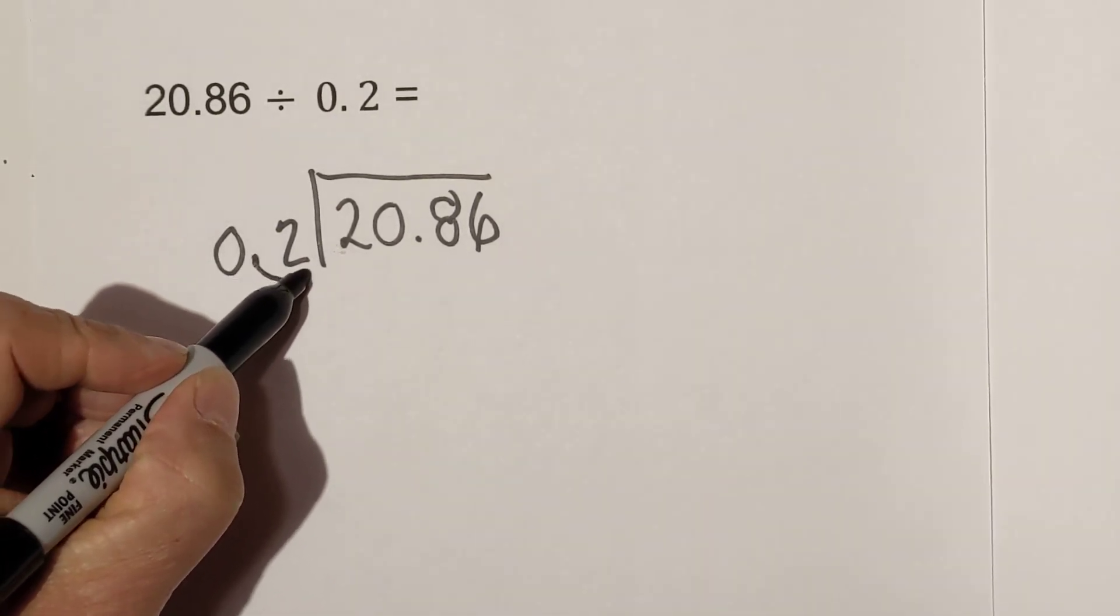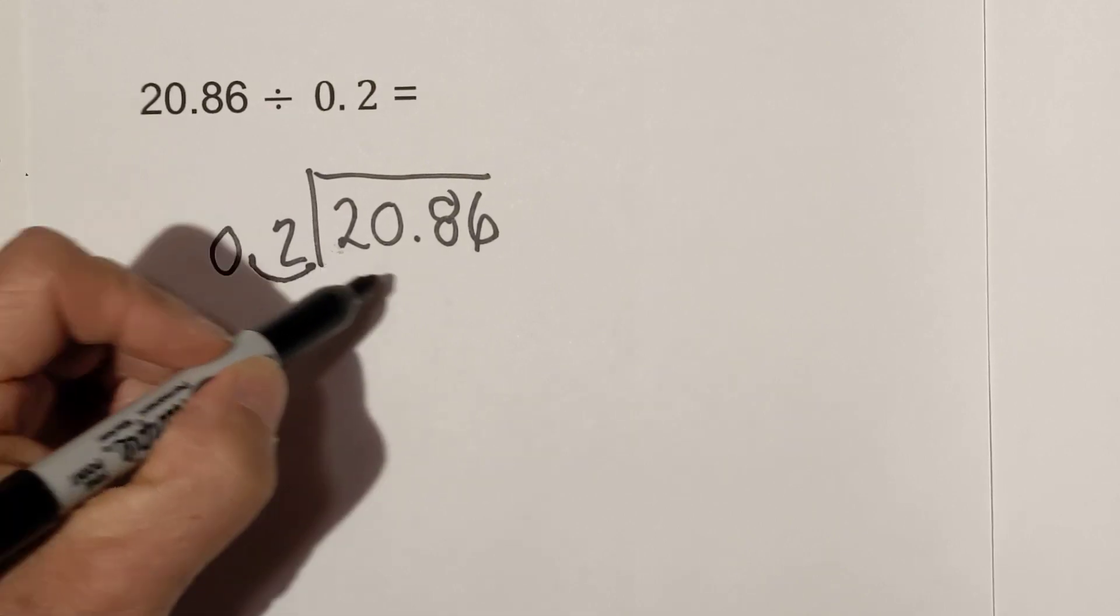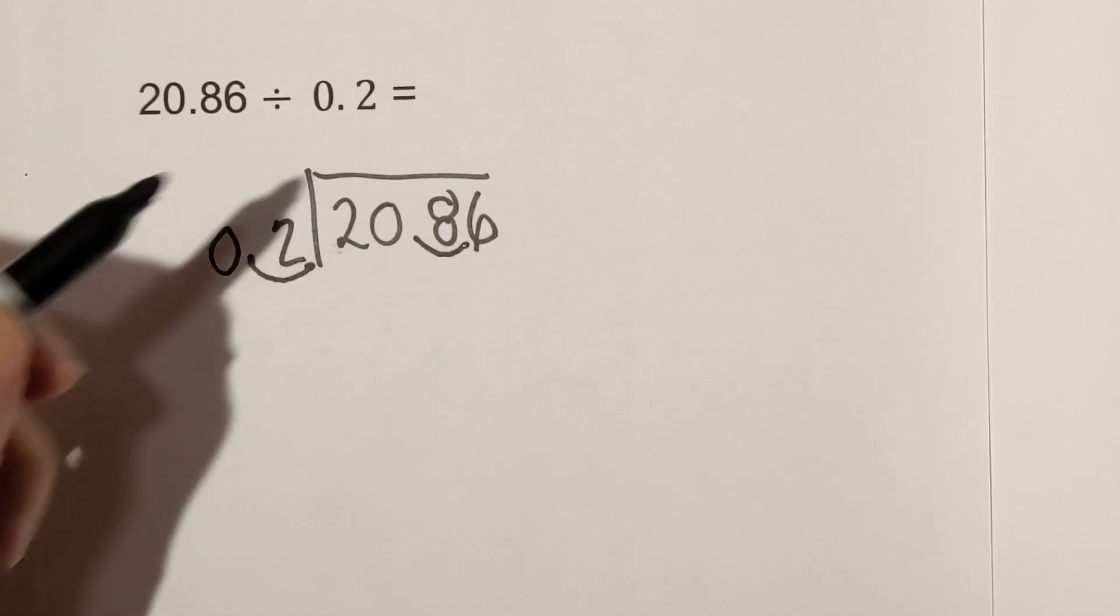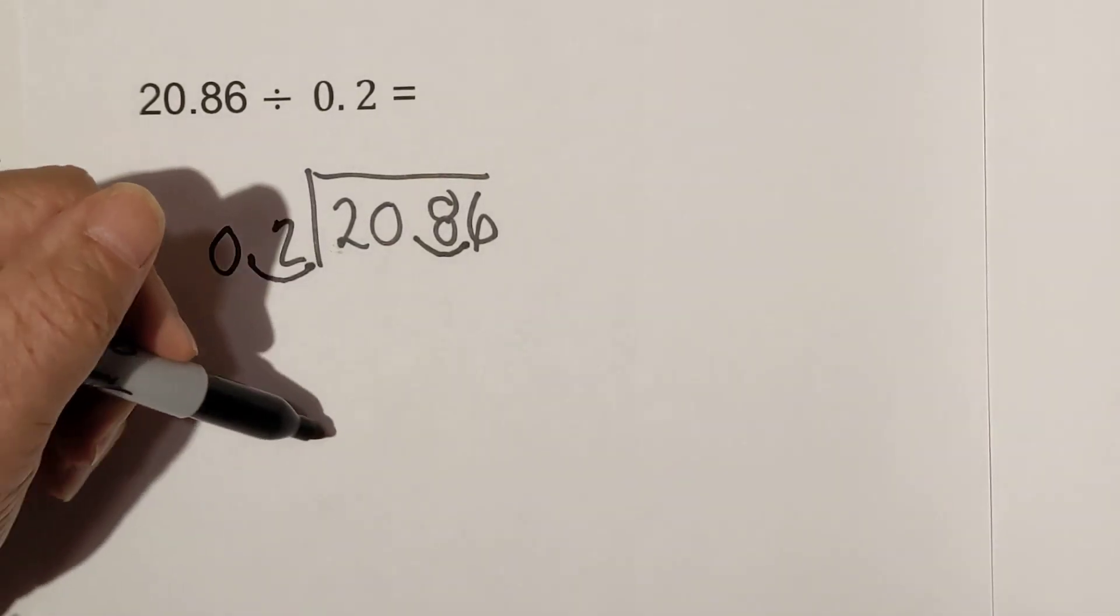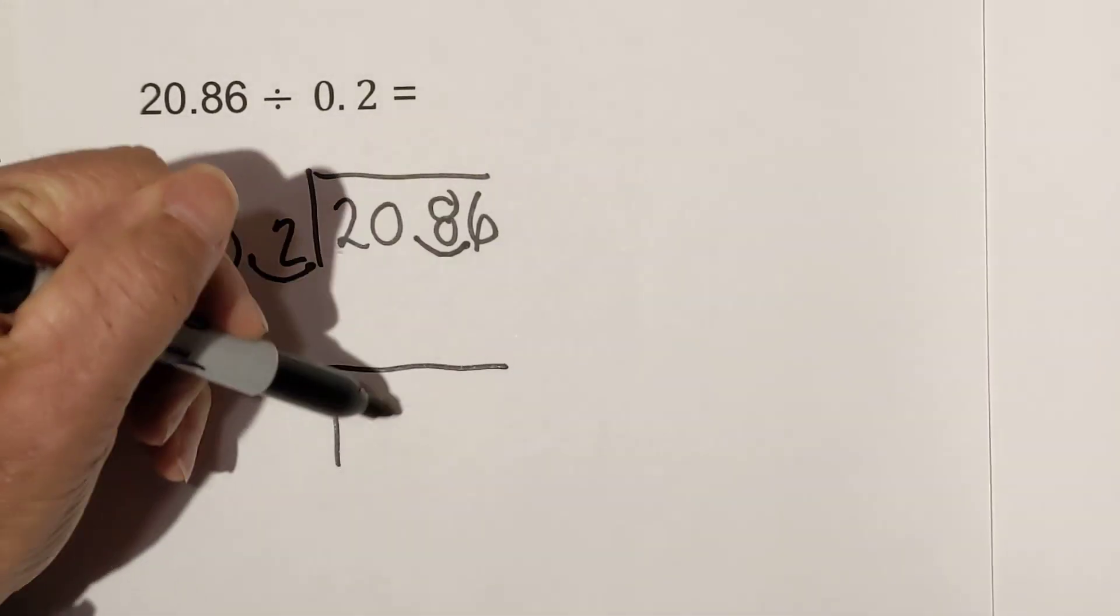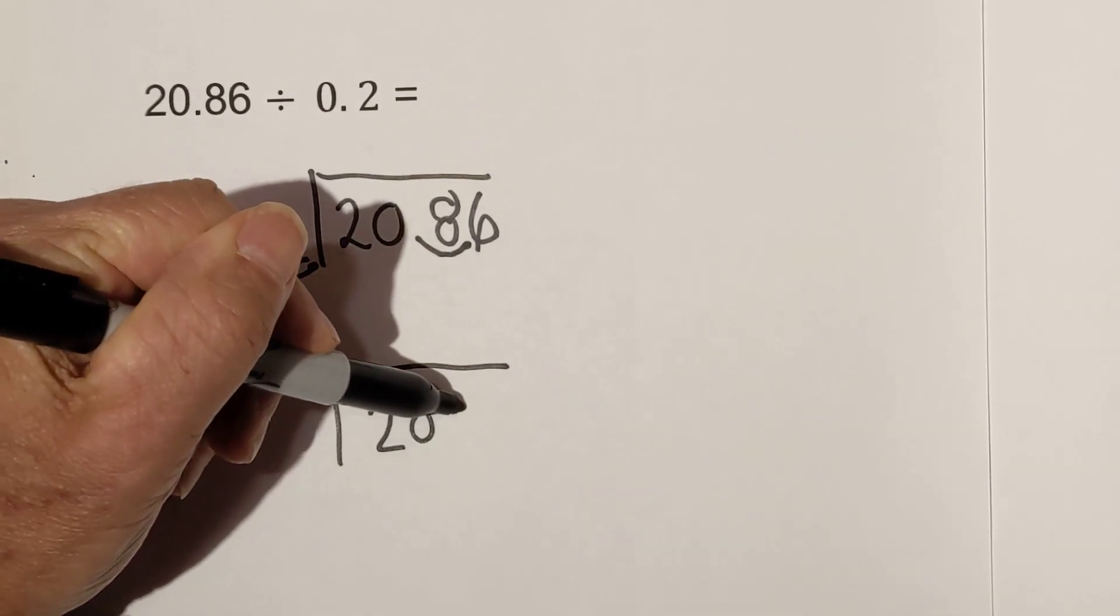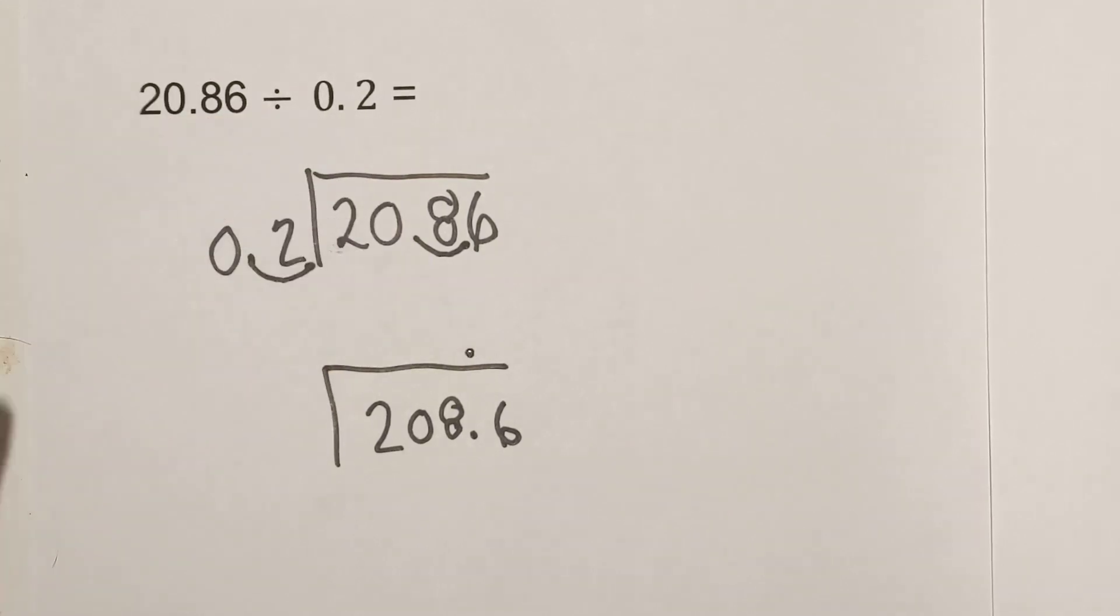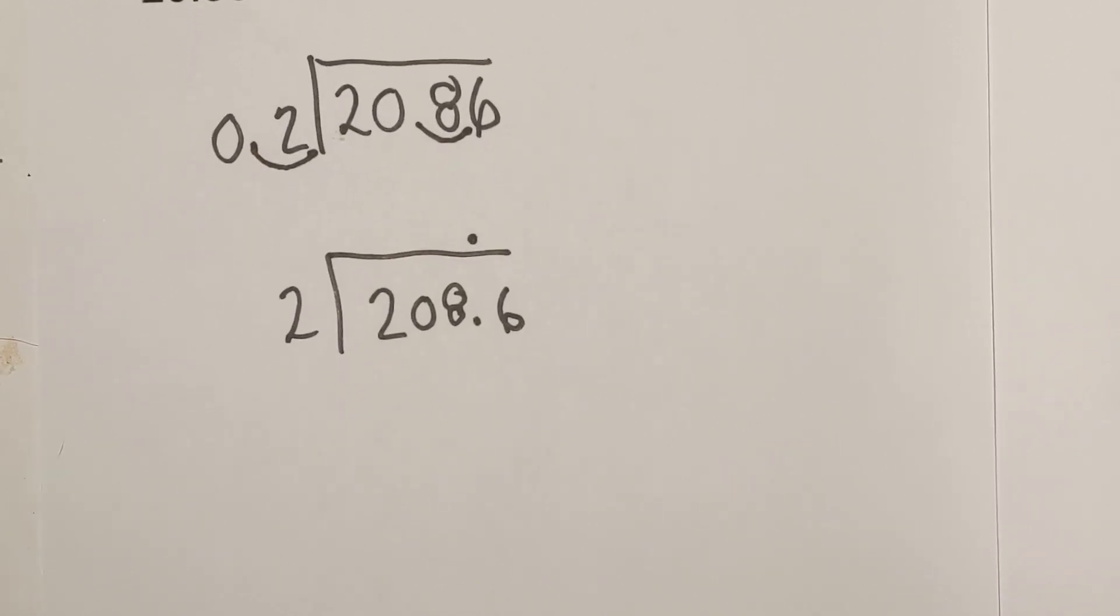So I'm going to move the decimal place 1 to the right, and it becomes 2. Remember what we do on the outside, we have to do on the inside. So we move it one place to the right. Now, let's rewrite it so it's not so messy. Decimal point is here. And then we have 2. So now all we do is some long division.